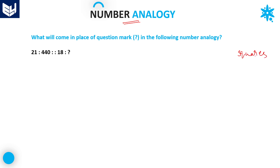See the first question. Here the question is 21 and 440. After that, 18 is given, and we have to find the next number. Here the first group of numbers are 21 and 440. You have to find the logic for the first group of numbers, and then apply the same logic for the second group. The logic here is: the first number is 21 and the second number is 21 squared minus 1. 21 squared is equal to 441.